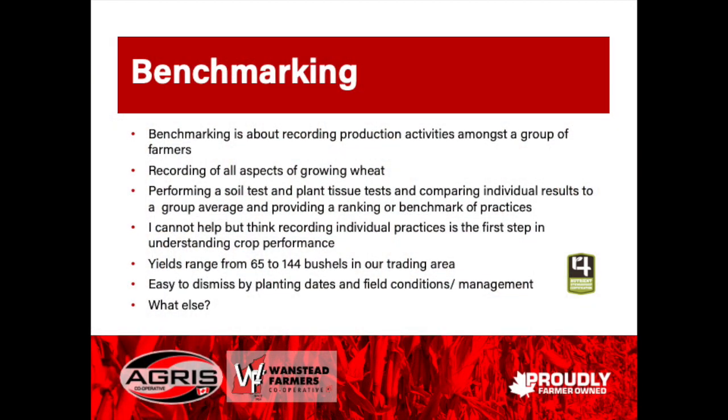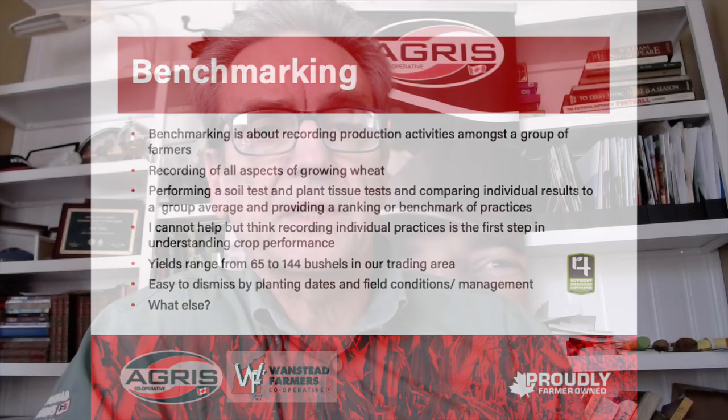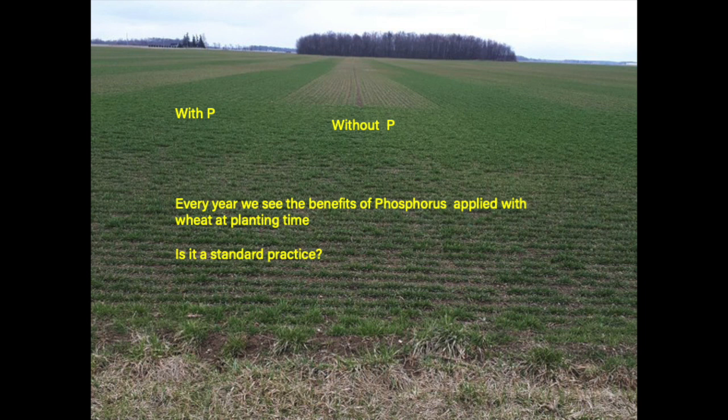When you look at yields ranging from 65 to 145 bushels per acre, it makes you wonder what is happening from a management standpoint. If you're going to improve on anything, you need to inspect what you expect, so we're going to do a deep dive into these practices, get them recorded in a database, and at the end of the year summarize everything to see what kind of practices lead to a better outcome.